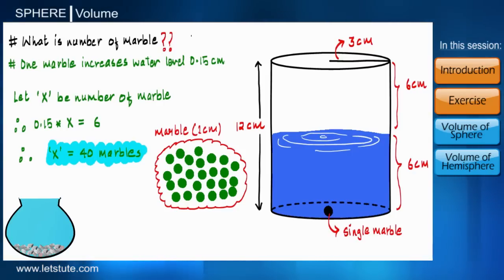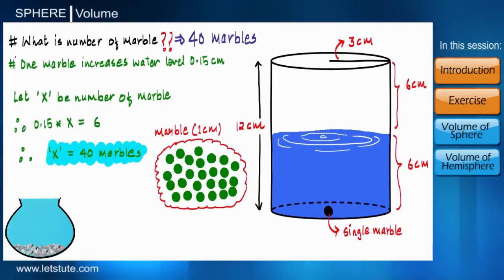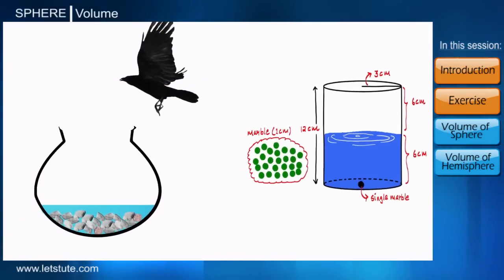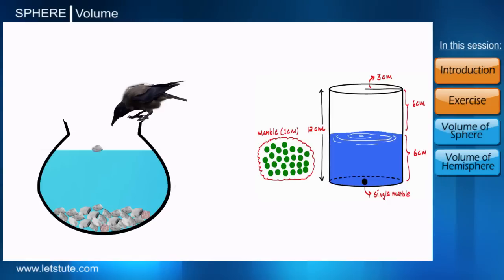Therefore we say that we require 40 marbles to raise the water level and completely fill the glass. Friends, if this additional information was not given to us, then how do we find the number of marbles? Are you all equally curious to know? See guys, that crow was not as smart as we are, but at least it knew that the water level was increasing and it kept on dropping stones till it could get the water. Being an intelligent species, how will we find the number of marbles by only knowing the radius of the marble and the dimensions of the glass?